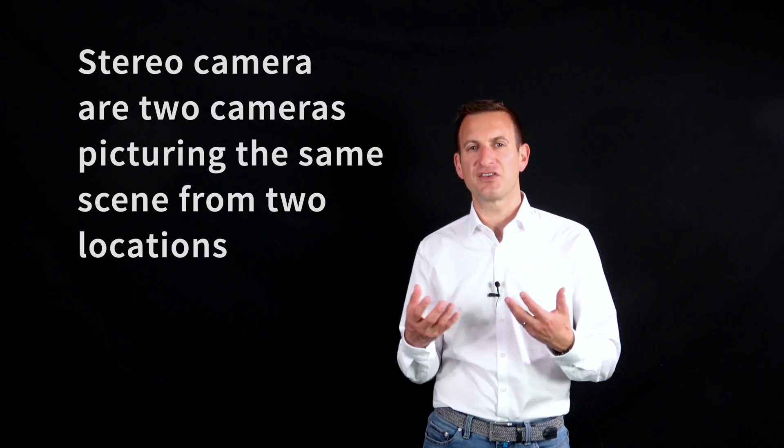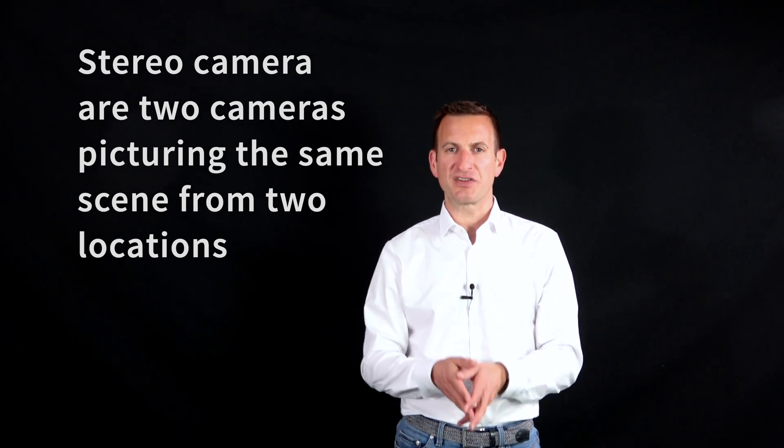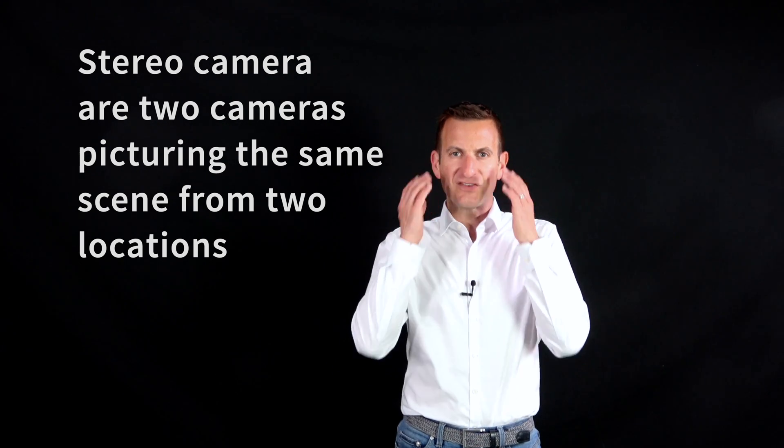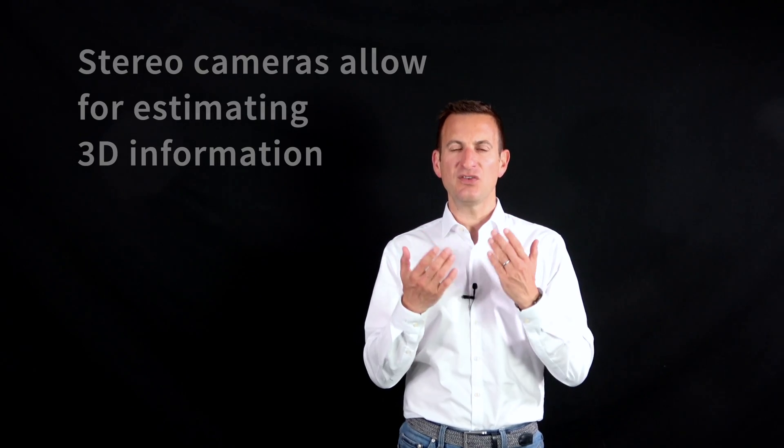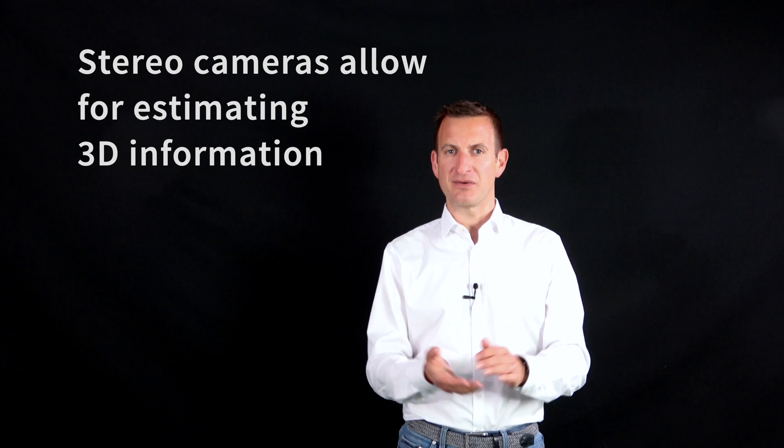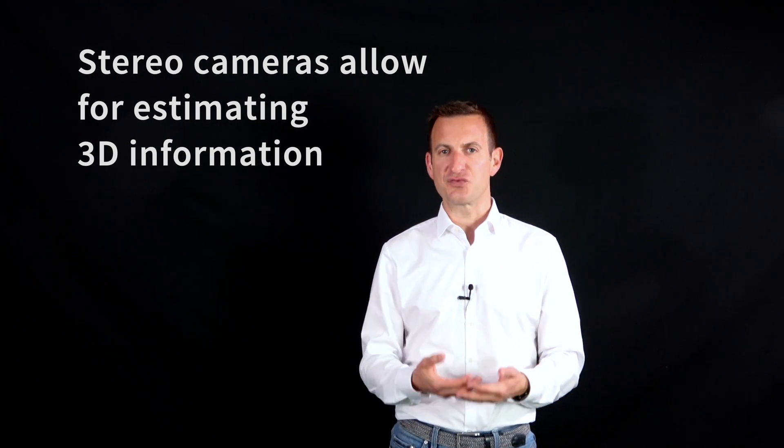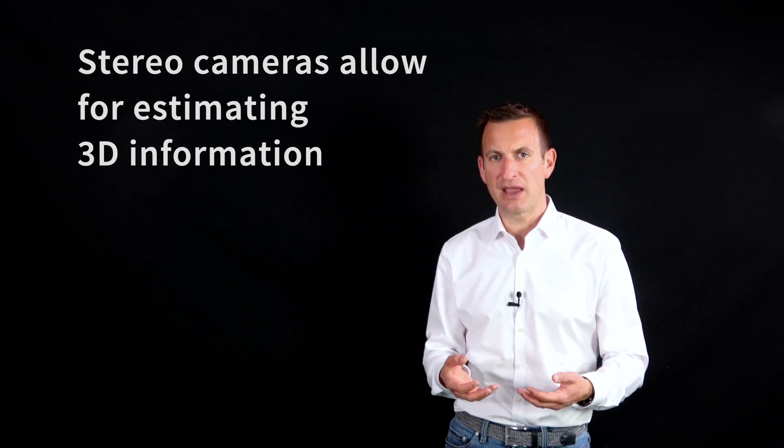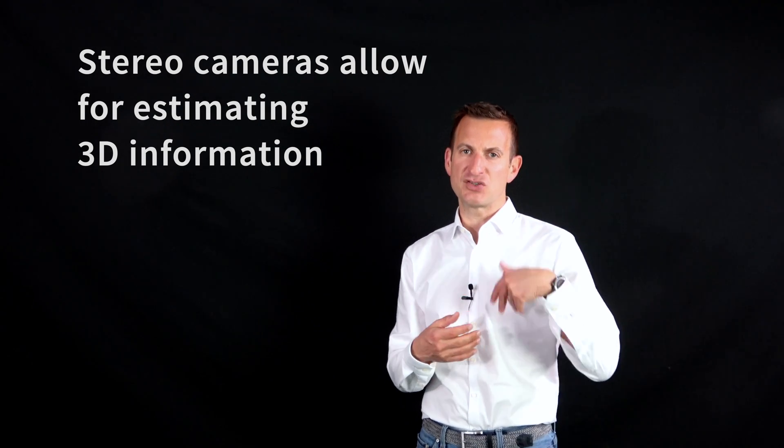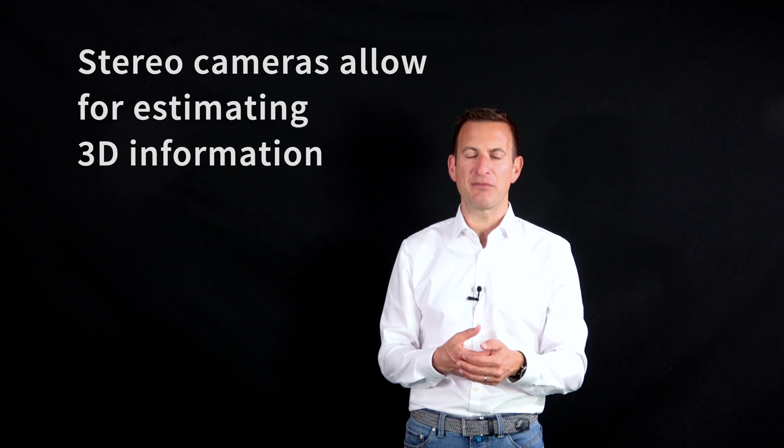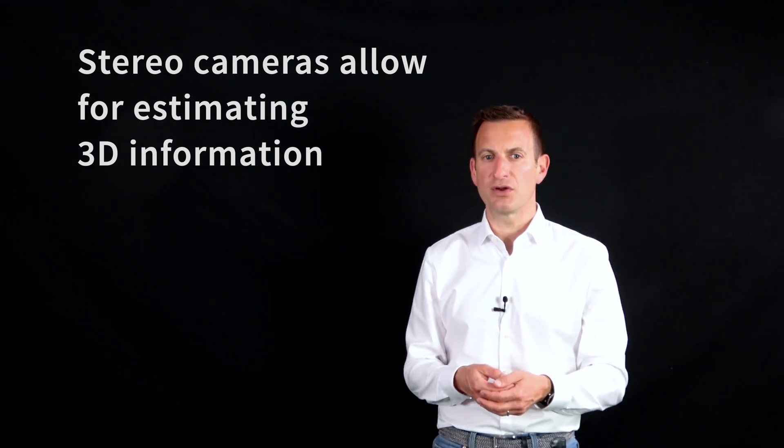Let's start with explaining what a stereo camera is. A stereo camera is a setup of two cameras picturing the scene, like the two eyes that we have in our head. We can use this information to estimate 3D information about the scene. From an image pair we can estimate the depth information, so how far is a point away from a camera, something that we cannot do with a monocular camera.